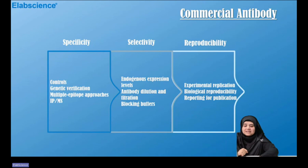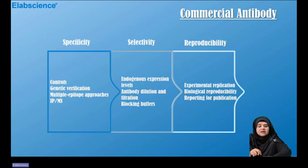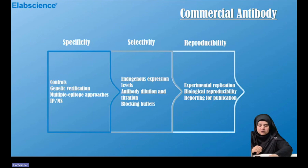Specificity means whether the antibody includes controls, whether it is genetically verified, or whether it can identify multiple epitopes. For selectivity, check the expression levels, dilution and titration, and what kind of buffers are needed. Reproducibility can be checked by experimental replication — whether the antibody is biologically capable of reproducing results and whether it appears in the published literature.